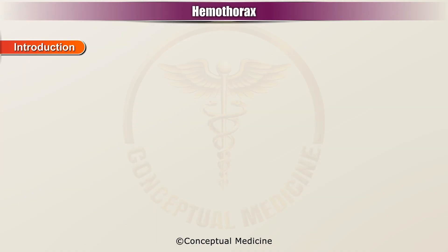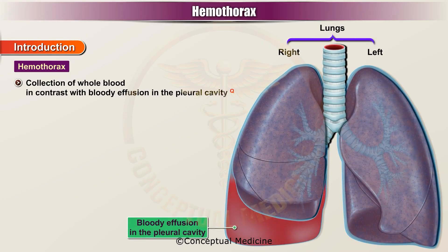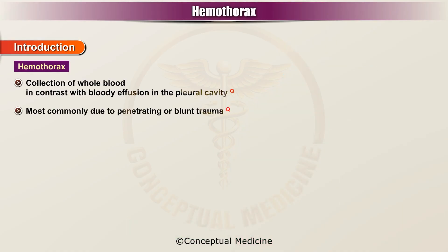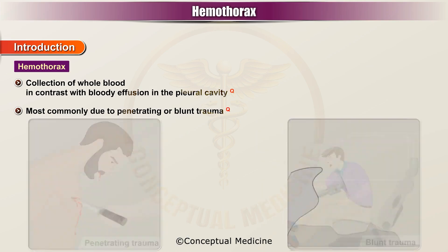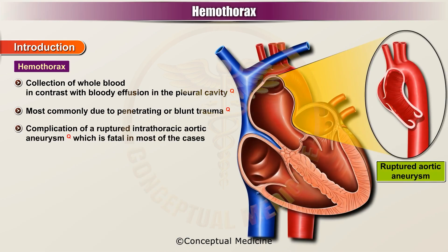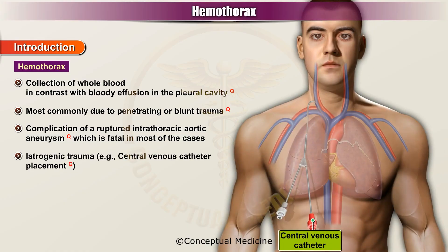Hemothorax is the collection of whole blood, in contrast with bloody effusion, in the pleural cavity. It is most commonly due to penetrating or blunt trauma. It may also be a complication of a ruptured intrathoracic aortic aneurysm, which is fatal in most cases. It may also be due to iatrogenic trauma, for example, central venous catheter placement.